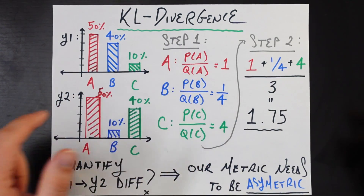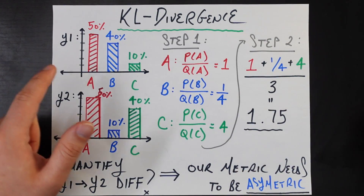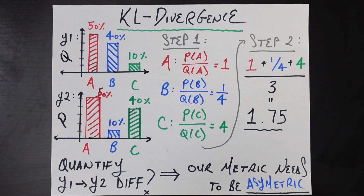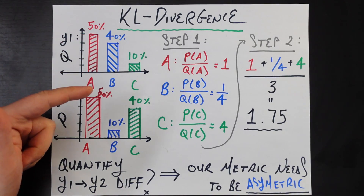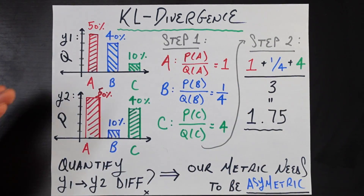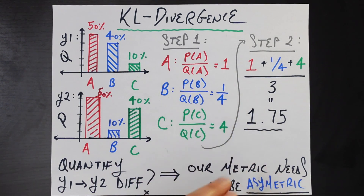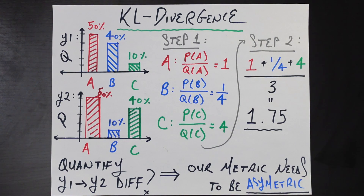So P(A) is the proportion of year two students that liked apple — 50% — and Q(A) is year one's proportion, also 50%, giving a ratio of one: no change. For bananas, P/Q is one-fourth, meaning only a quarter as many students liked bananas in year two versus year one. For clementines, P/Q is four, meaning four times as many students liked clementines in year two as in year one.